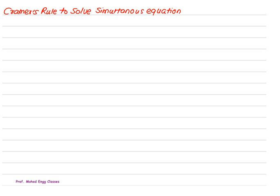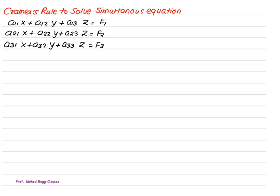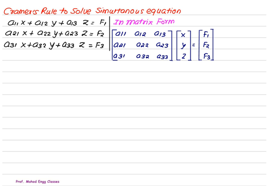Cramer's Rule to solve simultaneous equations. Suppose we have a simultaneous equation in the form: a11x plus a12y plus a13z equals f1, a21x plus a22y plus a23z equals f2, and a31x plus a32y plus a33z equals f3. In matrix form, we write the coefficient matrix as [a11, a12, a13; a21, a22, a23; a31, a32, a33], the column matrix of unknowns as [x, y, z], and the solution matrix as [f1, f2, f3].